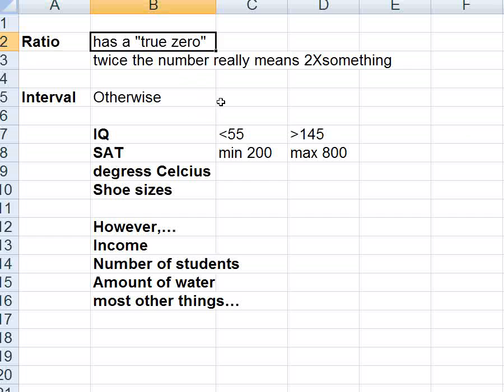The way to tell is it has to pass two tests. The first test is that your data has to have a true zero. That means zero means nothing. Zero means the absence of anything. Another test for ratio data is that twice the number really means two times something. It really means twice as much or twice as many things. Otherwise, it's going to be interval data.